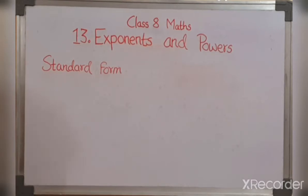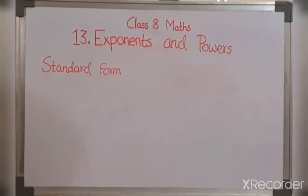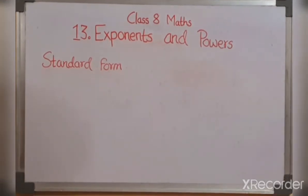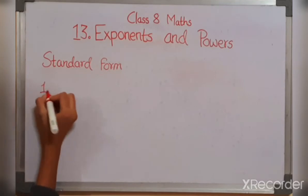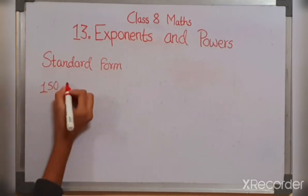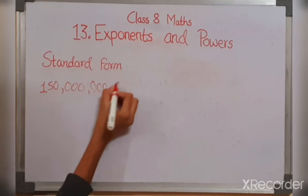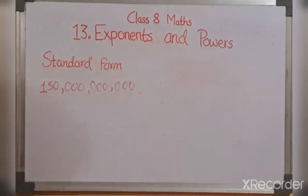In our previous class we have learnt how to express very large numbers in standard form. For example, take the number 150,000,000,000. So this is a very large number. So we have learnt in our earlier classes how to express it in standard form.